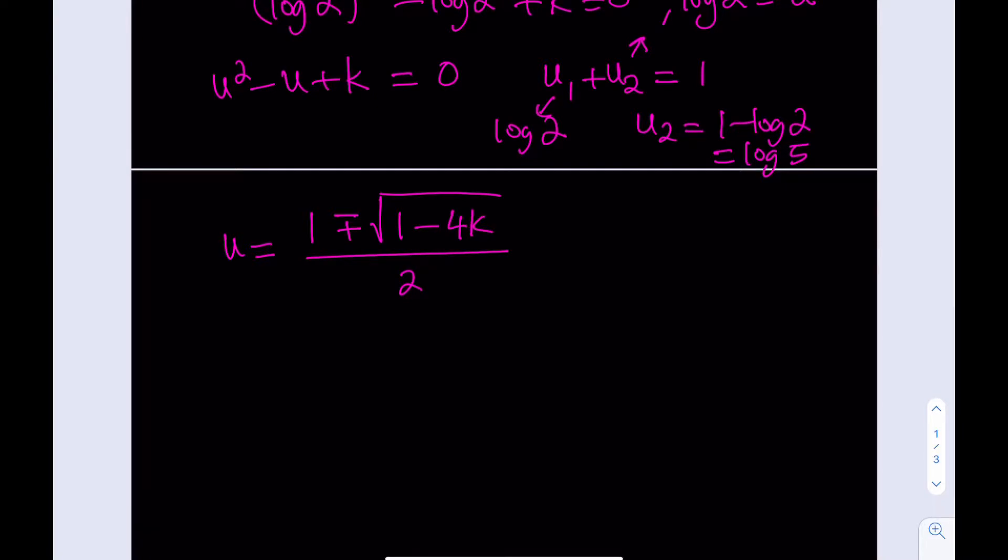We've got two solutions. But here's the million-dollar question: which one is log 5 and which one is log 2? Let's write these separately. u1, the positive version, is 1 plus the square root of 1 minus 4k divided by 2. And u2 is 1 minus the square root of 1 minus 4k divided by 2.